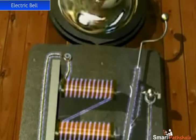However, when the electromagnet pulls the iron strip, it also breaks the circuit. The current stops flowing through the coil. Now the coil will not act as an electromagnet. It no longer attracts the iron strip.